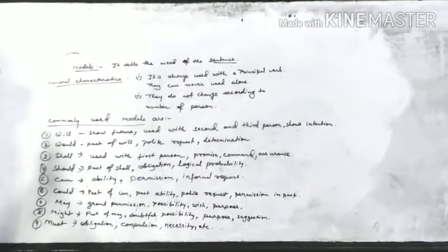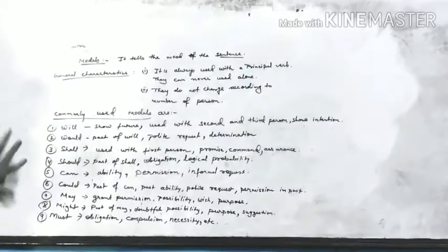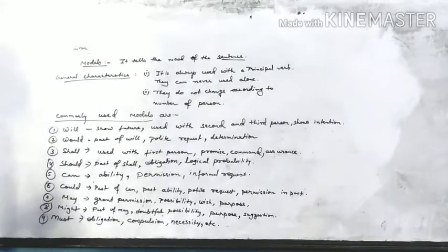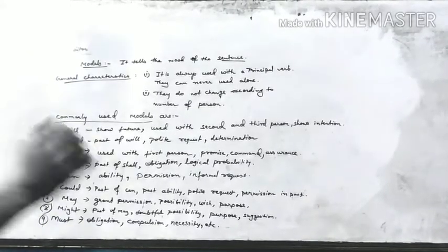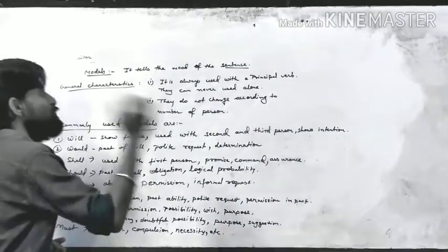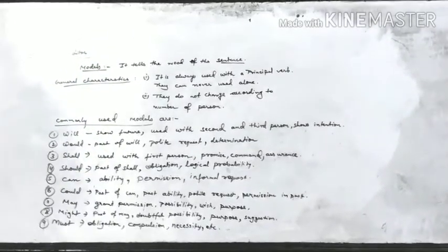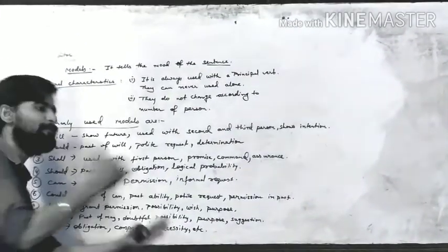As I have said, I will give you a brief discussion on modals. Modals are verbs — they are verbs which tell the mood of the sentence. The general characteristics of modals: modals are always used with principal verbs. They can never be used alone. In any sentence, modals cannot be used alone; they have to be used with a principal verb — there should always be a main verb in the sentence, and the modal is used before the main verb.